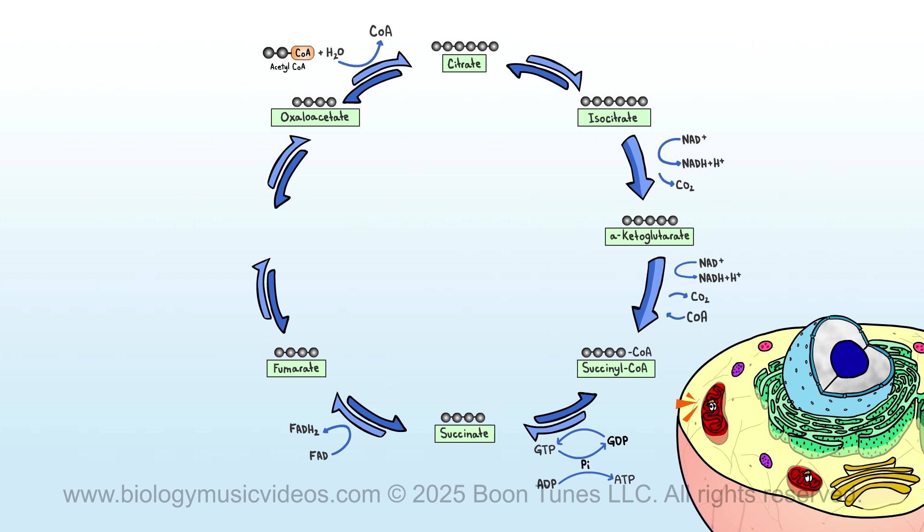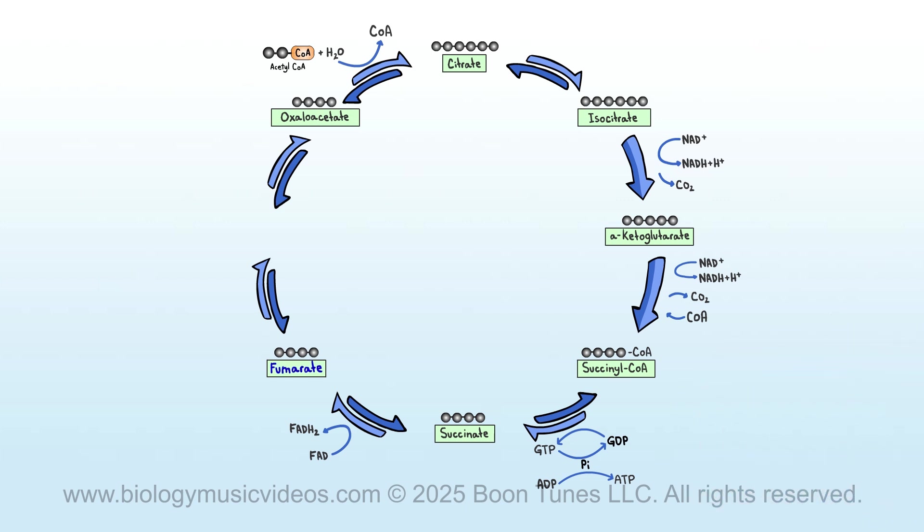Now it's time to talk about what step seven carries out. The fumarate that was created gains H2O and gets hydrated. The compound malate now is gained, which has four carbons in its chain.